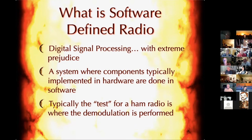Even if you have a whole bunch of digital signal processing connected to it, that doesn't make it SDR. An example is the ICOM IC-756 Pro, which has a lot of DSP filters. But really it's a super-heterodyne receiver where all the DSP is done after the demodulator. We'll talk a little bit later about why that really makes a difference.